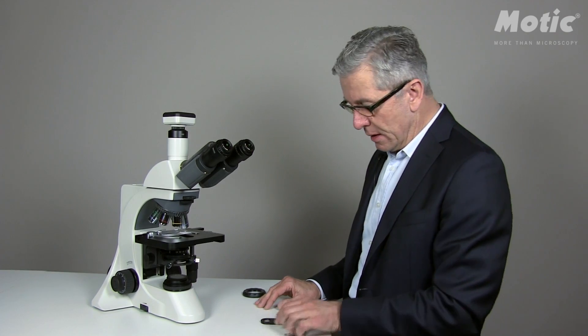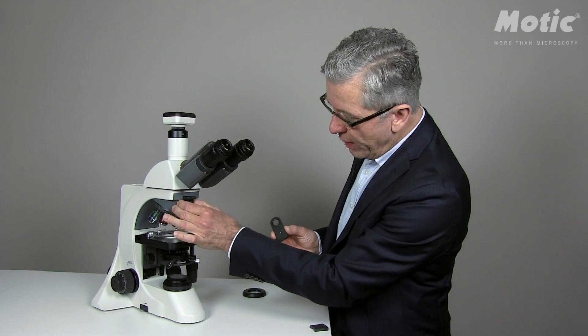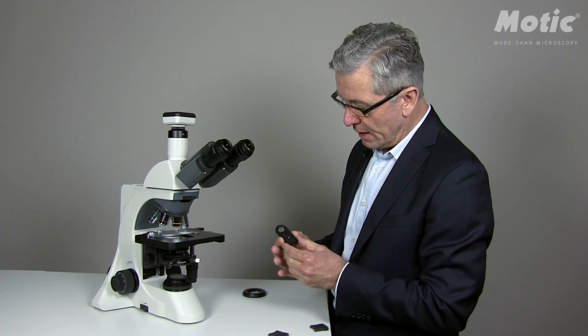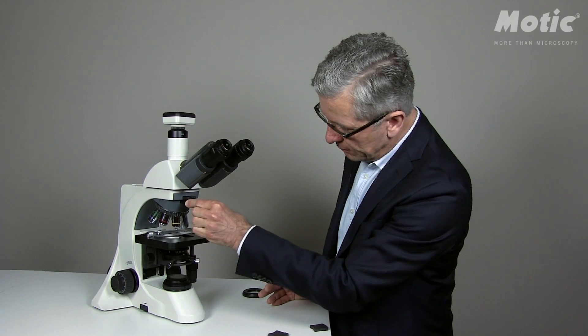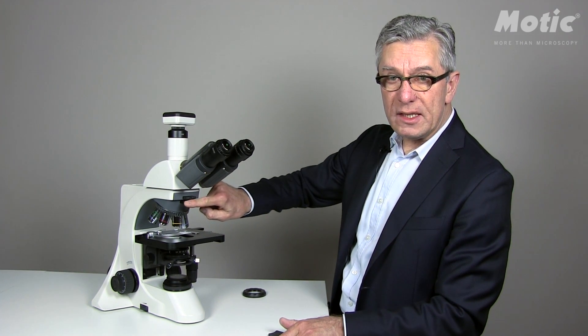If you like to use the first order red compensator, please take away the second dust cover and push it in. You may rotate the compensator in order to get the desired color.